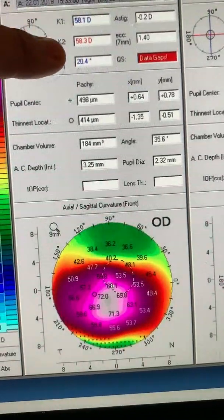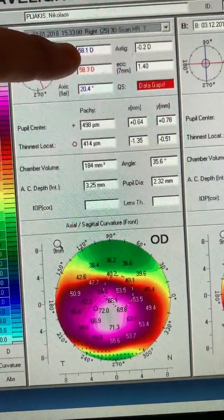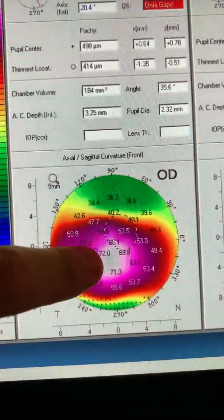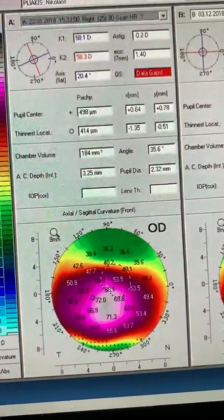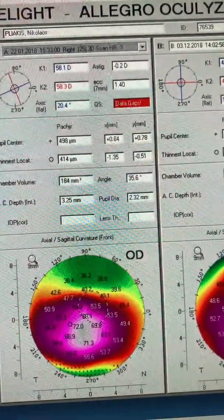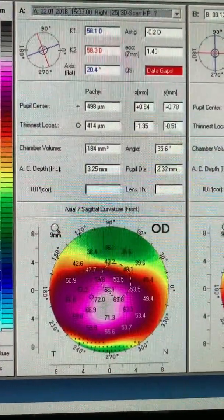To count fingers. We can see the extreme steepening, keratometry is 50, 658, steepest K 72, minimal thickness 414.